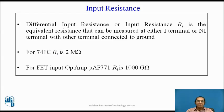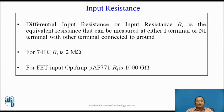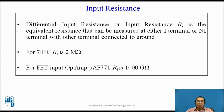The first important characteristic is input resistance. Input resistance RI is the equivalent resistance measured at either the inverting or non-inverting terminal, with the other terminal connected to ground. An ideal op-amp has infinite input resistance. However, a practical op-amp has a very high but finite value. For example, the op-amp 741C has an RI of 2 mega ohm, while the MUAF771, a FET-based op-amp, has an RI of the order of 1000 giga ohm.